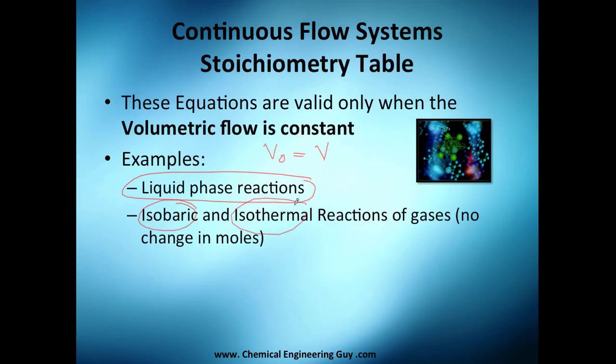A special condition is when you got isobaric, isothermal reactions with no changes in moles, so this number must be zero, and P1 must be P2, and T1 must be T2. If you got this condition, you can use these equations.